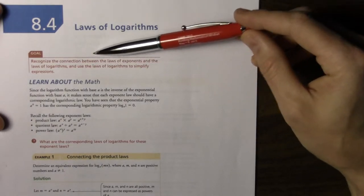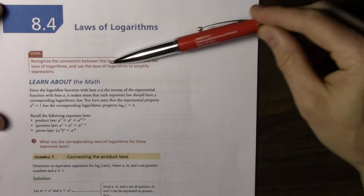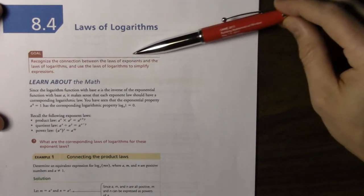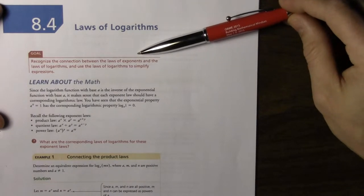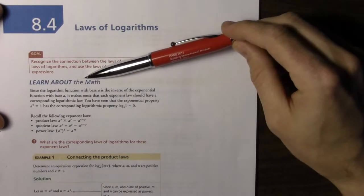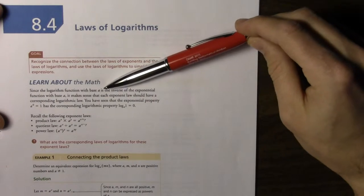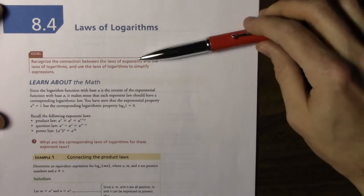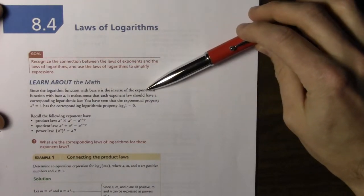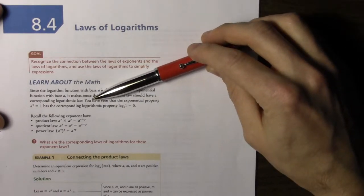So our goal is to recognize the connection between the laws of exponents and the laws of logarithms and use the laws of logarithms to simplify expressions. So since the logarithm function with the base a is the inverse of the exponential function with base a it makes sense that each exponent law should have a corresponding logarithmic law.